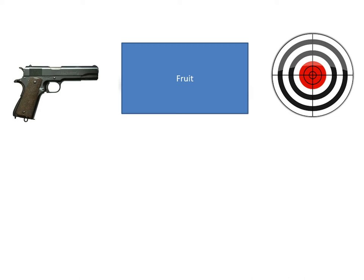Before teaching you the experiment they did on the atom, I'd like to teach you about a made-up experiment to show how we can know what something looks like without seeing it. Imagine there's a box and in the box is a piece of fruit. I can't see in that box, but I am allowed to fire little ball bearings out of a gun through the box and hit the target on the other side.